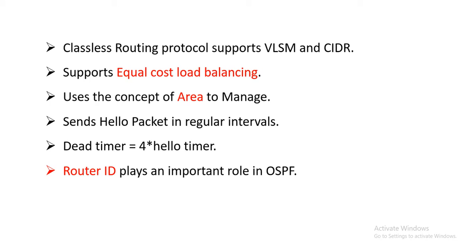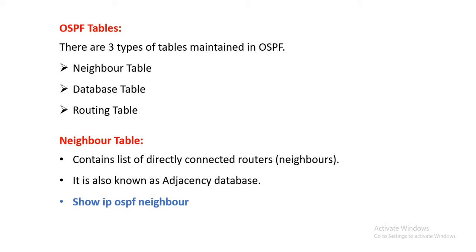Router ID plays an important role in OSPF. There are three tables maintained in OSPF: the neighbor table, the database table, and the routing table. The neighbor table contains the list of all directly connected routers. It is also known as the adjacency database. Using the command 'show ip ospf neighbor' we can see all the directly connected routers or neighbors of this router.